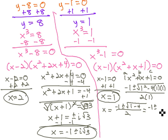So we have negative 1, plus or minus the square root of negative 3, when we subtract, over 2.